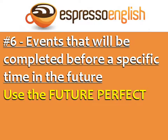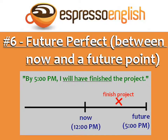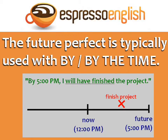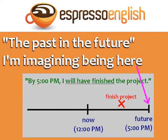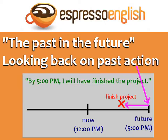Finally, we have events that will be completed before a specific time in the future. In this case, use the future perfect. Imagine it's twelve o'clock p.m. and you need to finish a project before five o'clock p.m. You can say 'By five p.m. I will have finished the project,' because the completion comes between now and five o'clock. The future perfect is typically used with 'by' and 'by the time.' Some people call the future perfect 'the past in the future,' because you are imagining being at a future point in time — five o'clock — and looking back on an action that has been completed.